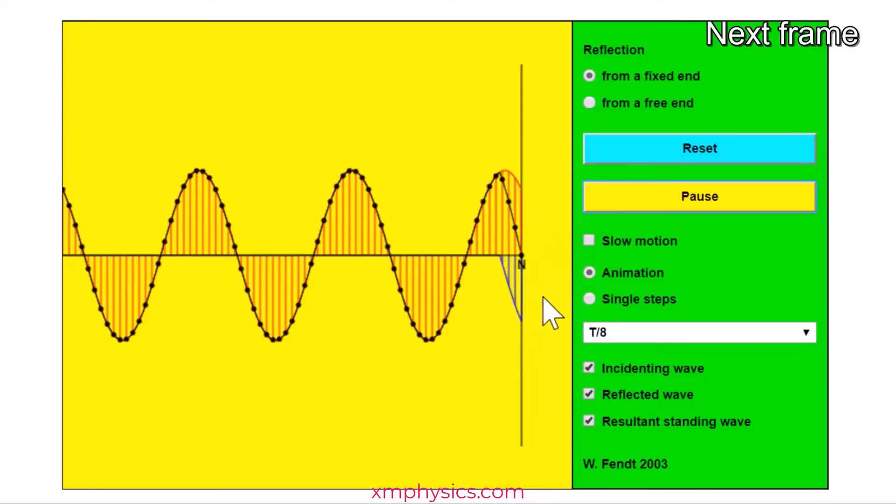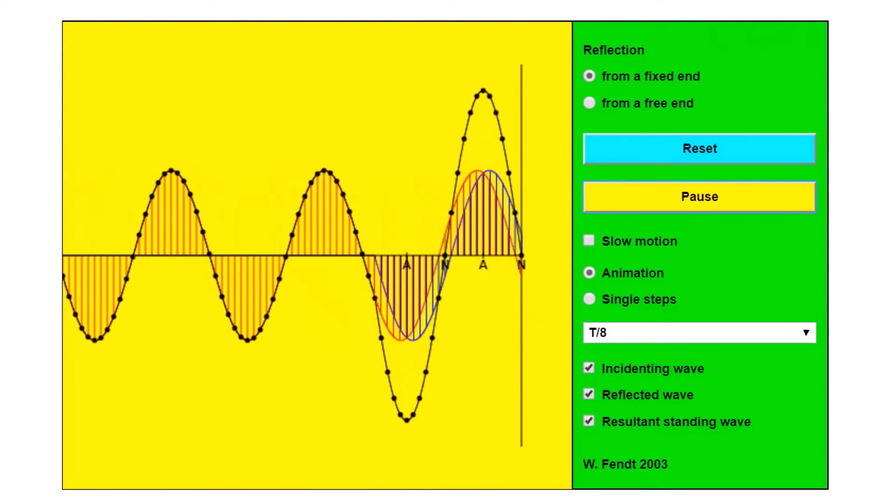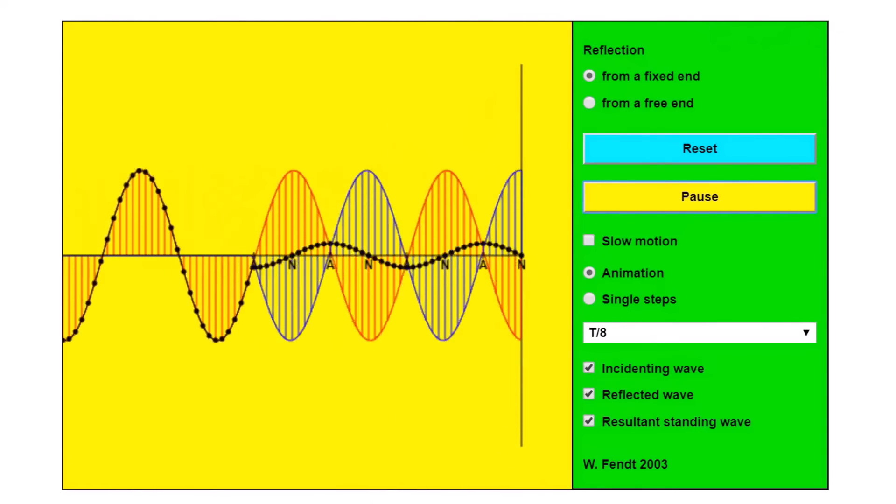You see the incident and reflected waves always have opposite displacements. That's why they will always superpose to give you zero. That's why the fixed end is a node. Now look again.